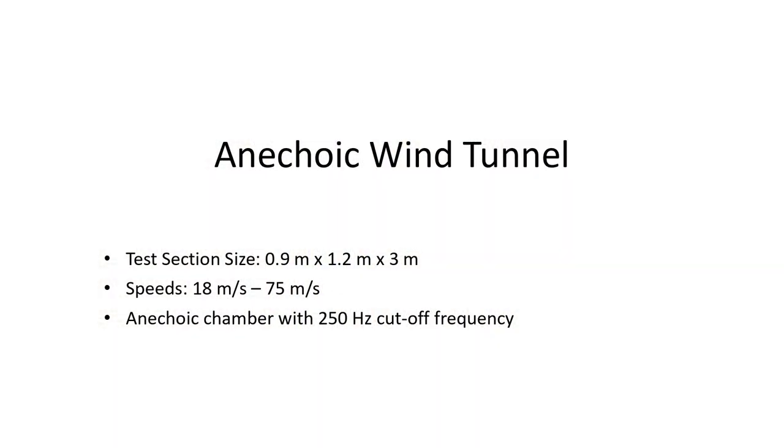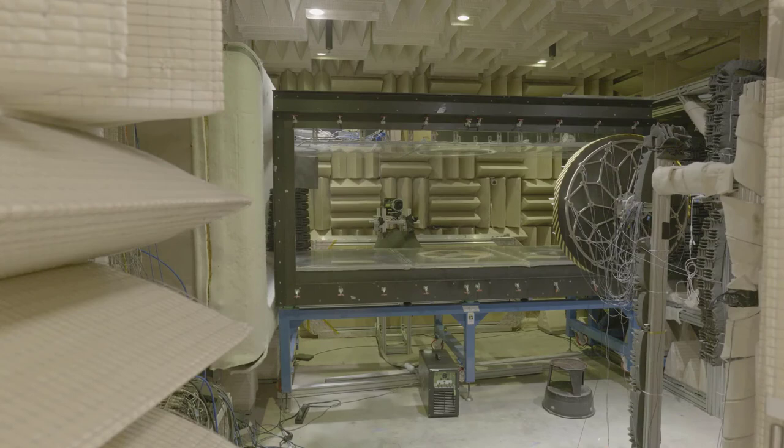The anechoic wind tunnel is an open-circuit subsonic facility with a test section size of 36 inches by 48 inches and a speed range of approximately 18 to 75 meters per second. The facility employs a 450 horsepower centrifugal fan and has an anechoic chamber with a 250 Hz cutoff frequency, enclosing the test section.